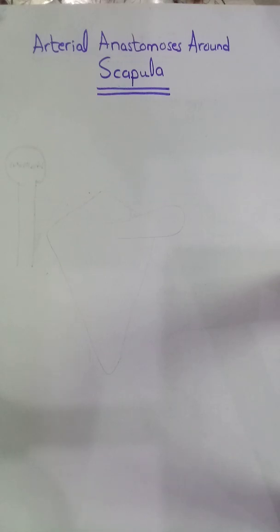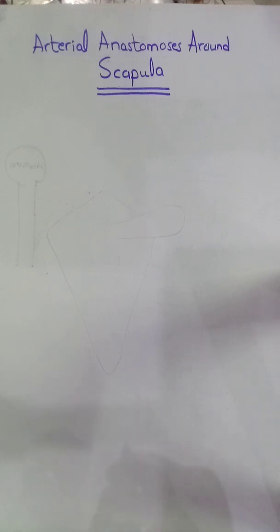Assalamu alaikum. Today we are going to discuss the arterial anastomosis around the scapula. This anastomosis is very important for collateral circulation. First we will see a brief introduction and then we will draw it.